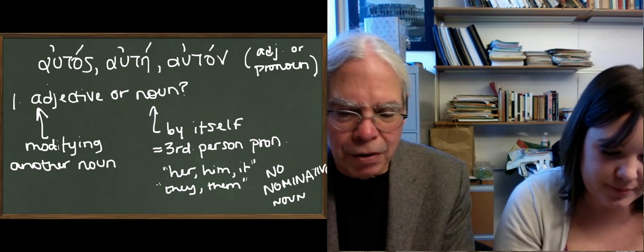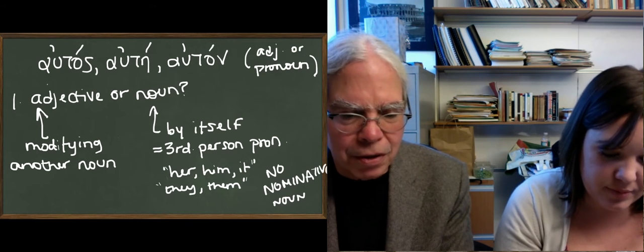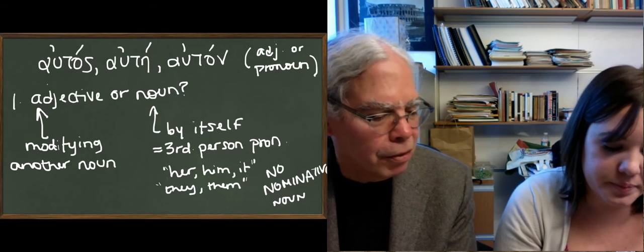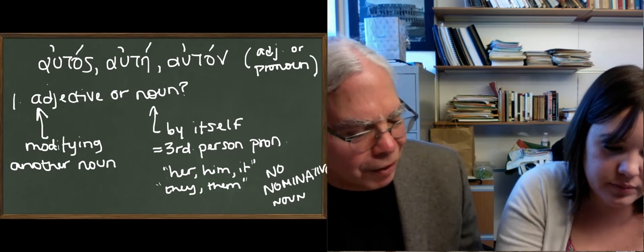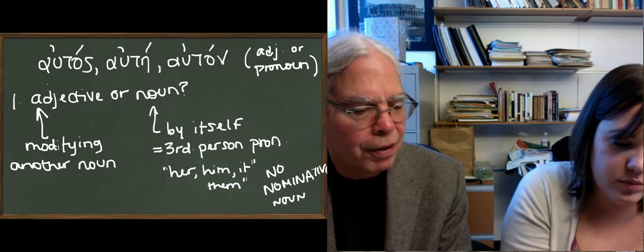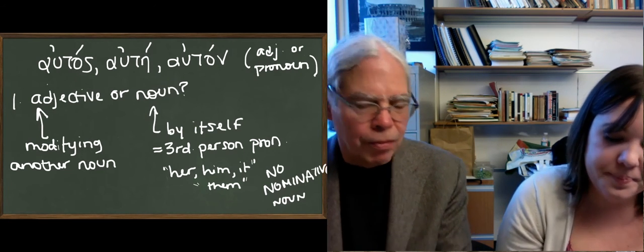That's why we're saying her, him, and it, because it never is he, she, and it's never they. It's always them. So you can delete the they there. That was my mistake. I don't mean them in the plural.